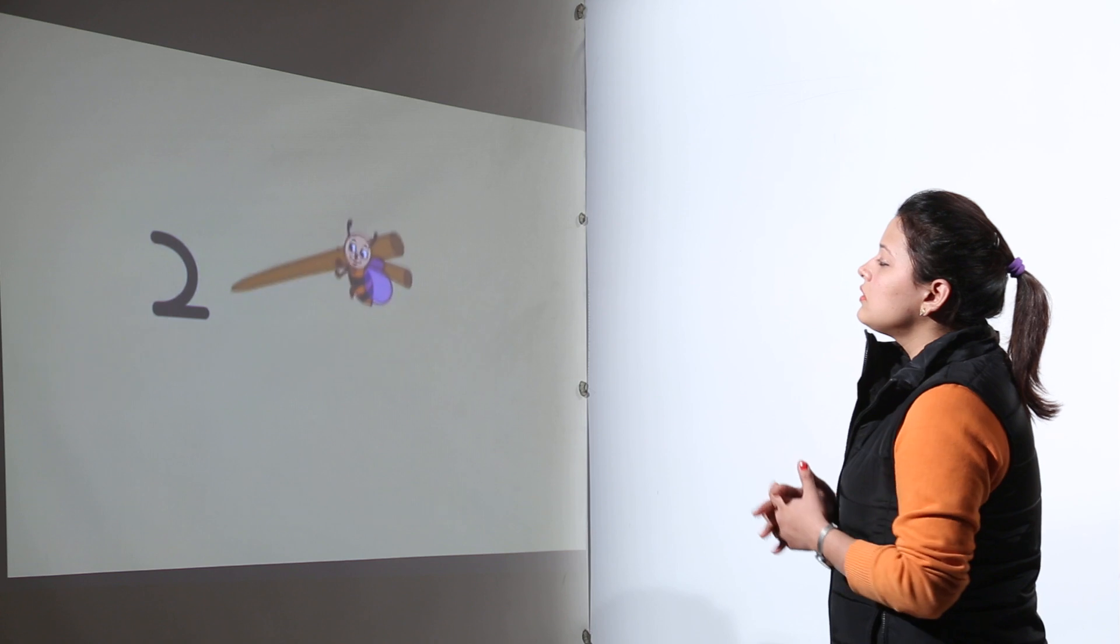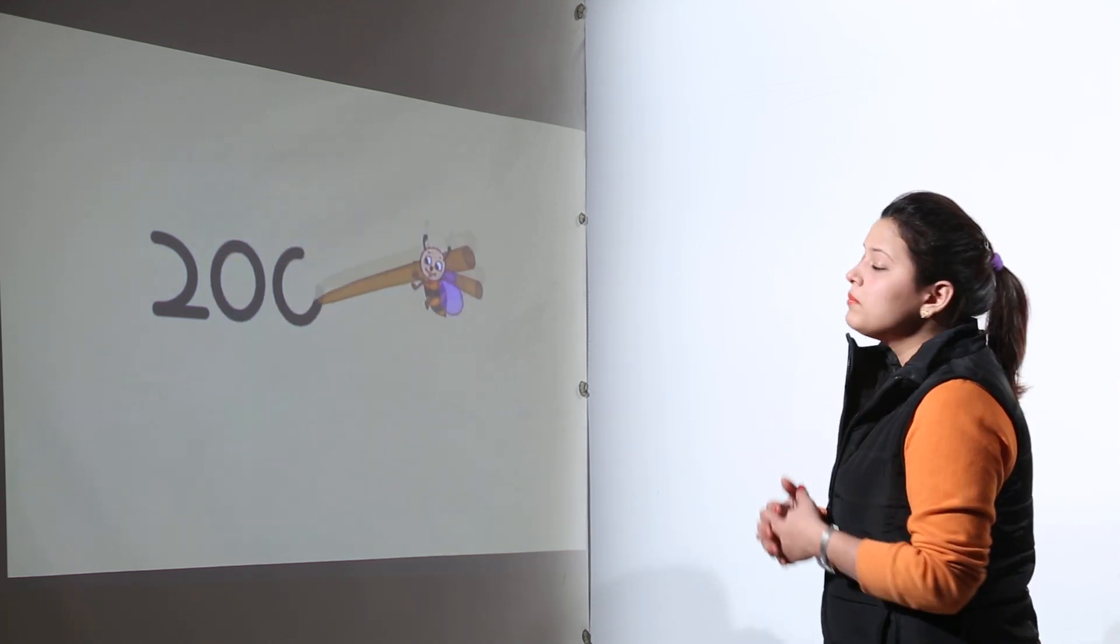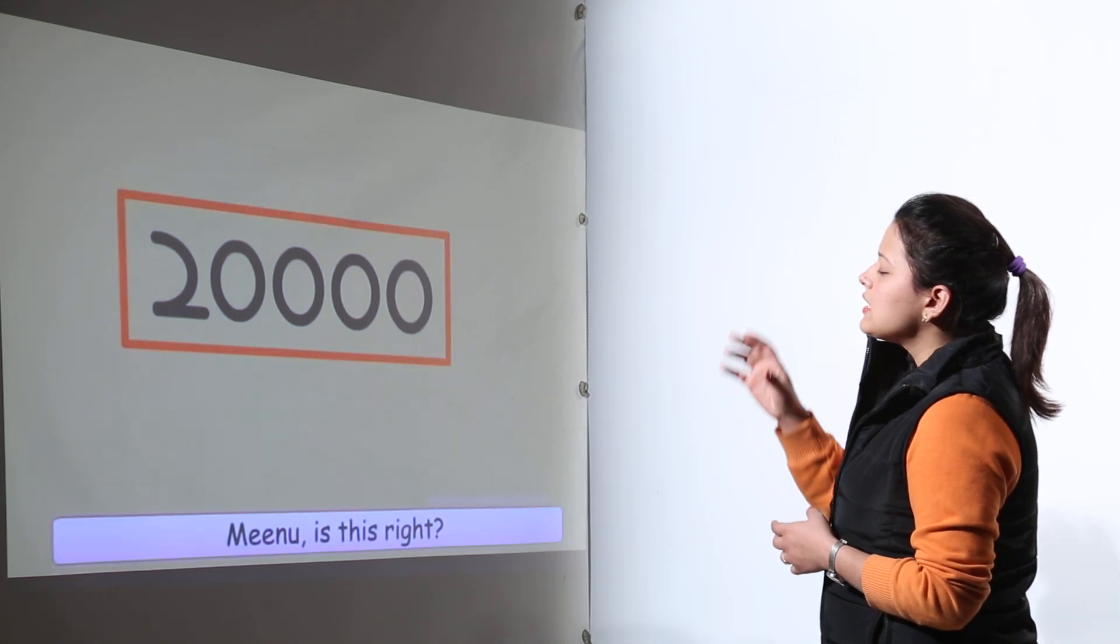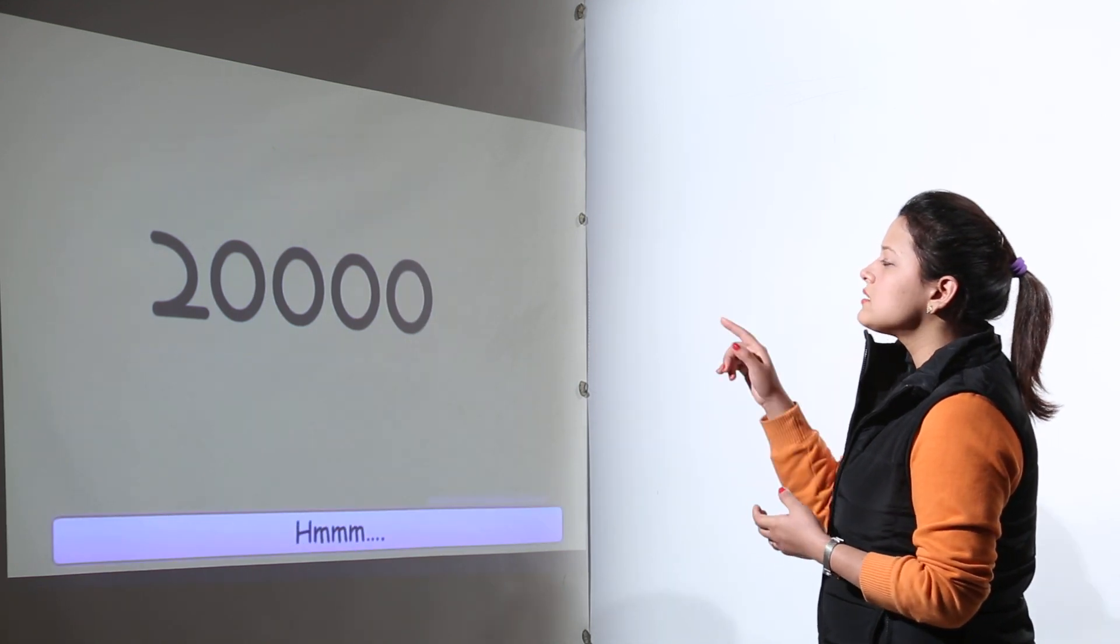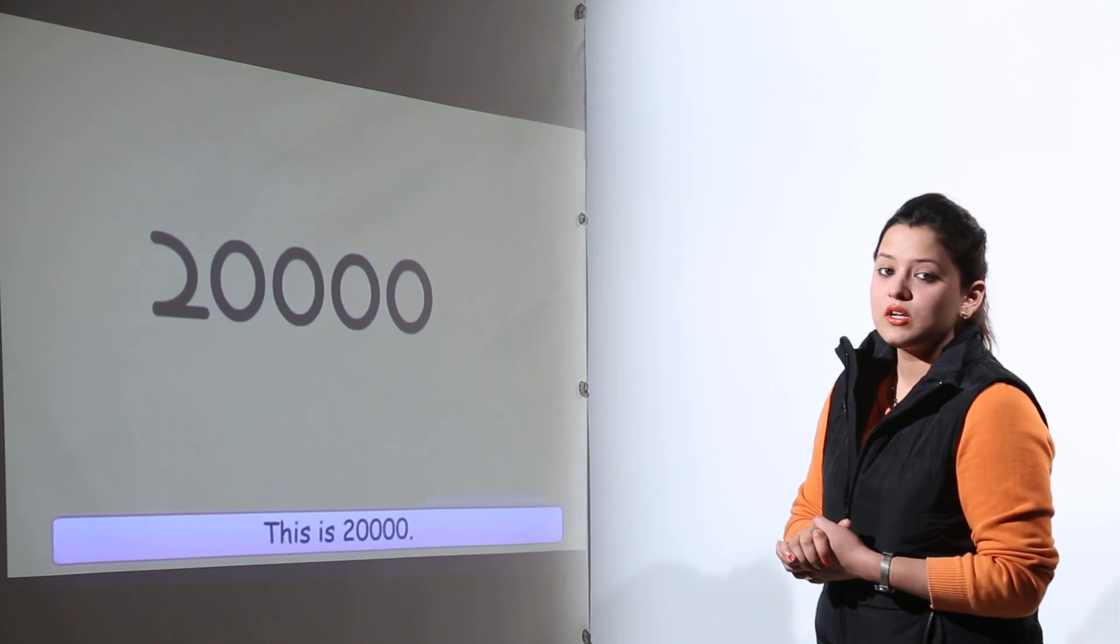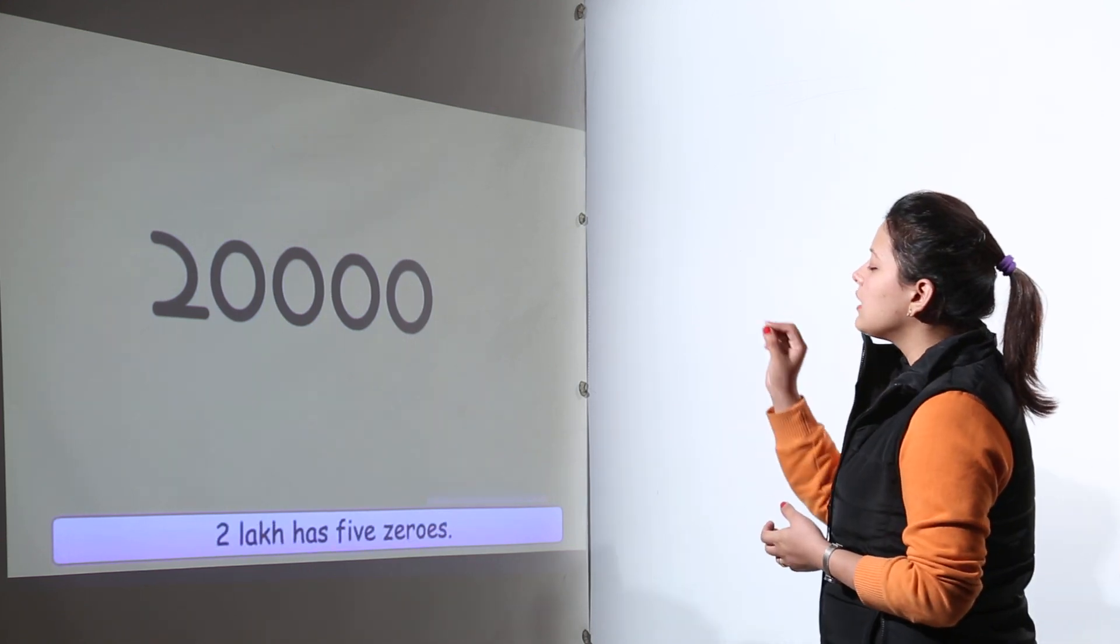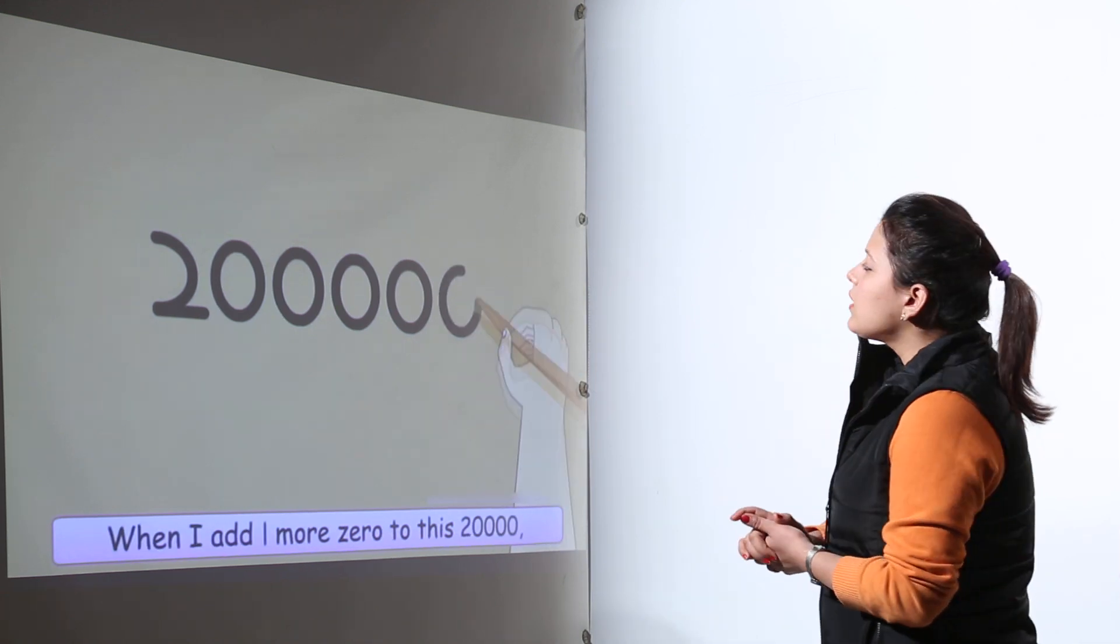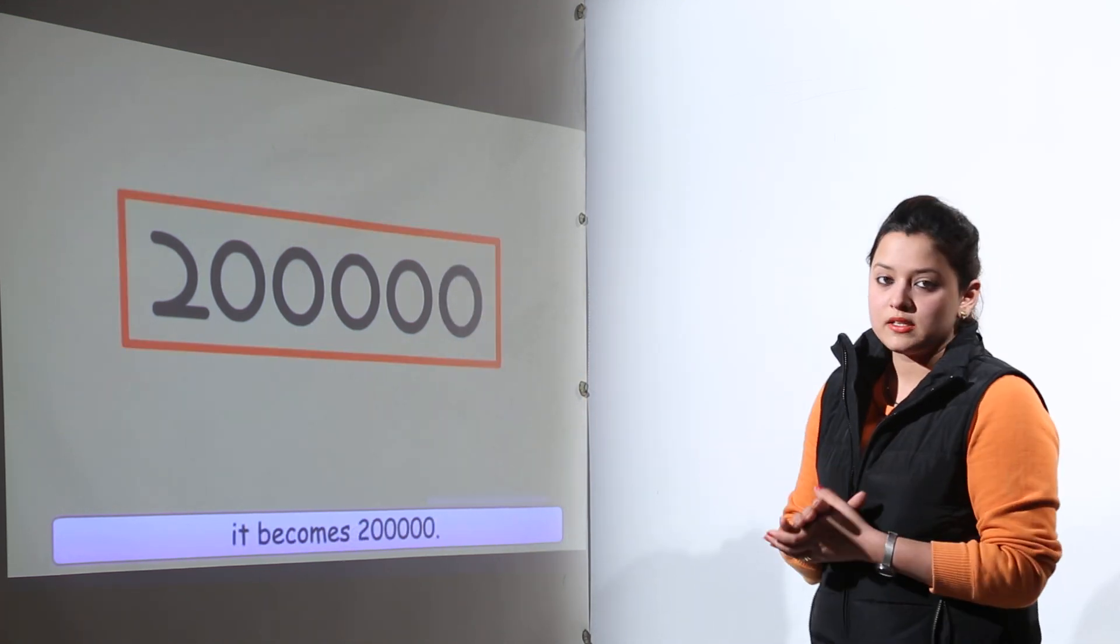If we write down the value 2 lakh, what would it be? 2, we add 3 zeros, the fourth zero. Is it 2 lakh? No. It is right now only 20,000. For lakh, we have to add another zero to this because lakhs have 5 zeros. So if you add another zero to this, now this becomes 2 lakhs.